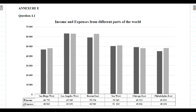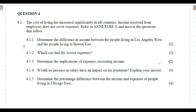On the y-axis we have the values of income and expenses, and on the x-axis we have the different places from various parts of the world. We are going to use this stacked bar graph to help us answer the questions given.